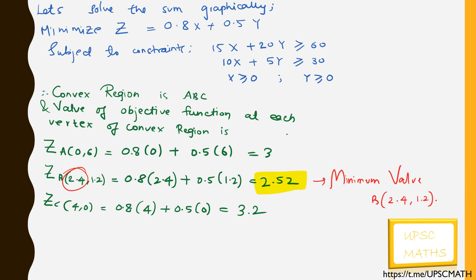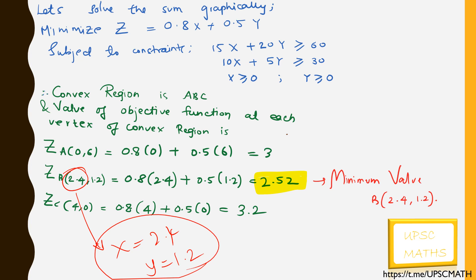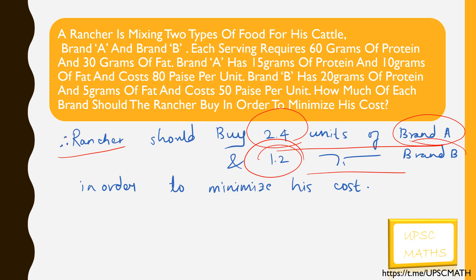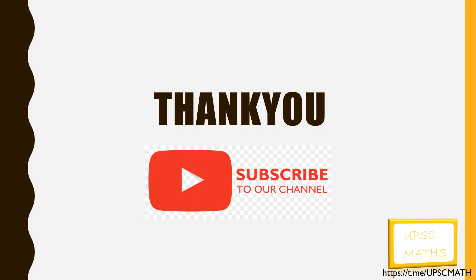Hence the optimal solution is obtained at x = 2.4 and y = 1.2, and z minimum = 2.52. So the required solution is: the rancher should buy 2.4 units of Brand A and 1.2 units of Brand B in order to minimize his cost. Thank you for watching, and don't forget to subscribe to the channel.